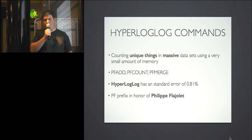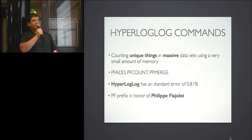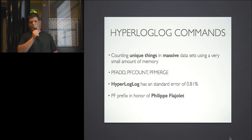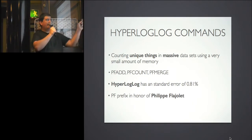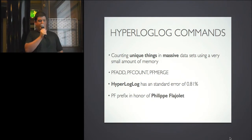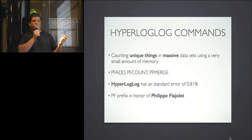HyperLogLog — it's all about counting unique things. It hasn't been around long so it only has three commands. Bear in mind that for very big data sets it has a standard error of 0.81%, which is not a big deal — don't expect exact precision, but for counting millions of elements it's much more memory-efficient. The PF prefix is in honor of Philippe Flajolet, a French computer scientist who contributed greatly to algorithm studies.